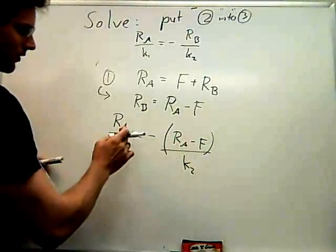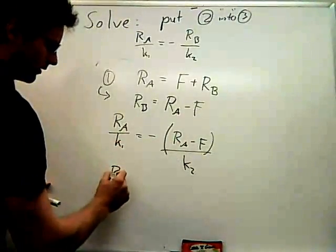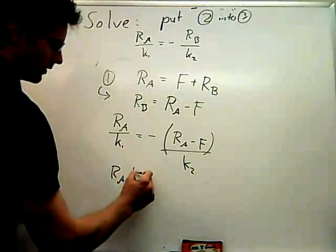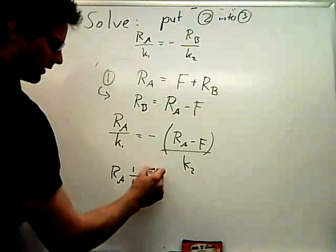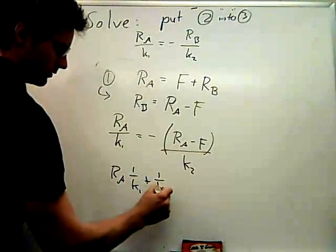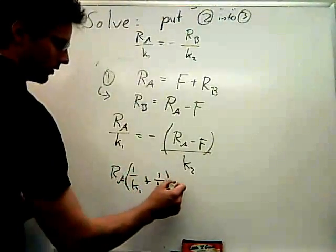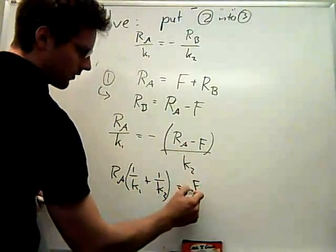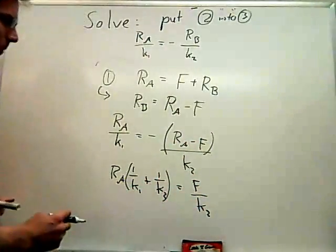And I could bring this to the other side. So then I have RA over K1 plus RA over K2. So I'll pull the RA out—that's got to be negative negative F, so that's just F over K2.